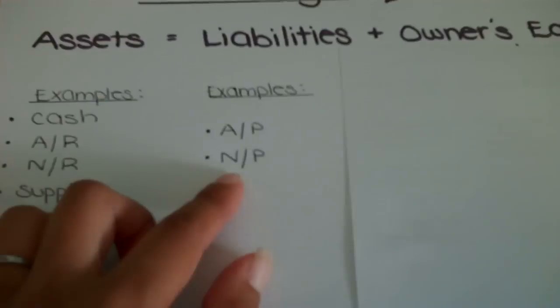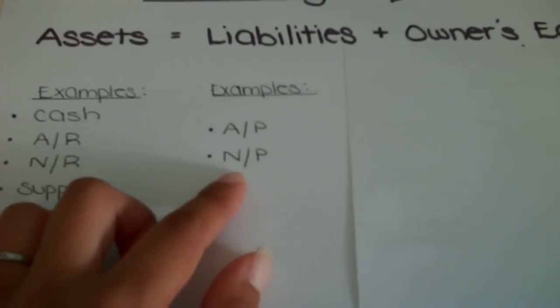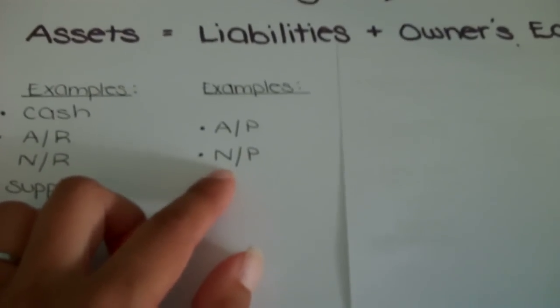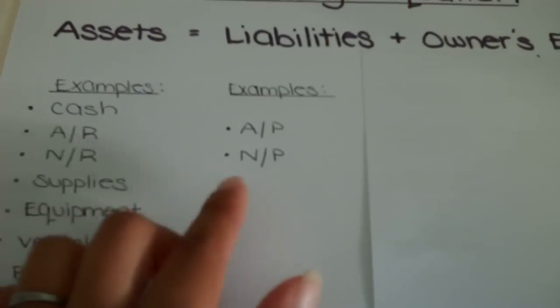And then N/P, or notes payable, which again is money the company owes to an outside party, but very similar to notes receivable.